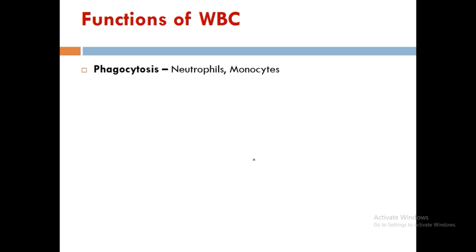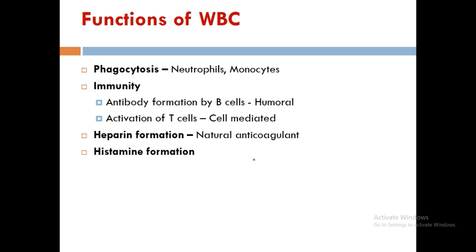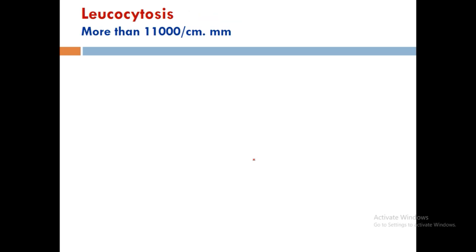The functions of WBCs include: phagocytosis (mainly by neutrophils and monocytes), immunity — antibody formation by B cells for humoral immunity and activation of T cells for cell-mediated immunity — heparin formation as a natural anticoagulant, histamine formation, anti-allergic and anti-parasitic action by eosinophils, macrophage formation by monocytes, and formation of endogenous pyrogens such as interleukin-1.